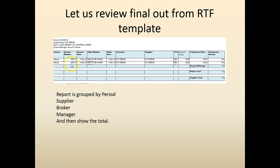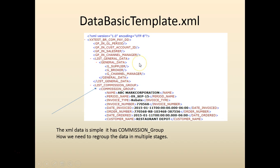In the RTF template we have regrouped the data - regroup by channel, regroup by broker, and regroup by sub-supplier to give totals. Before we do that, let's look at the XML file. The main root element is the commissions group, and under the commissions group we have different data elements we will leverage to regroup the data.